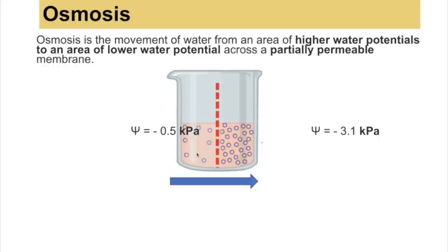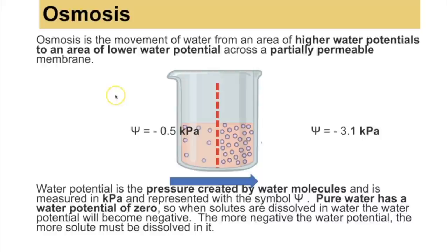Osmosis is the movement of water from an area of higher water potential to an area of lower water potential across a partially permeable membrane. Water potential is the pressure created by water molecules, measured in kilopascals (represented by the symbol psi). Pure water has a water potential of zero — it is always zero or negative. When solutes are dissolved in water, the water potential becomes negative; the more solutes, the more negative the water potential.